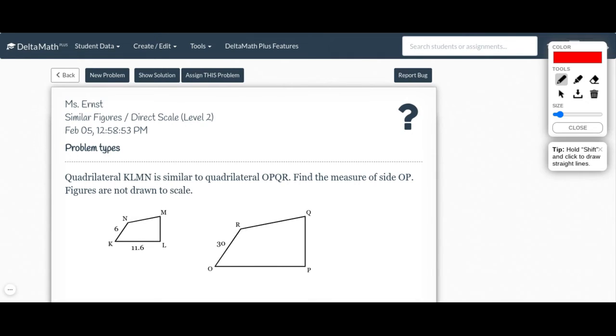In this first one, it says quadrilateral KLMN is similar to quadrilateral OPQR. Find the measure of the side OP. Figures are not drawn to scale.